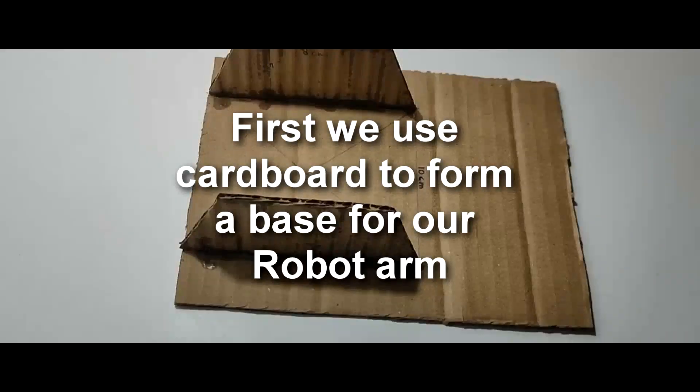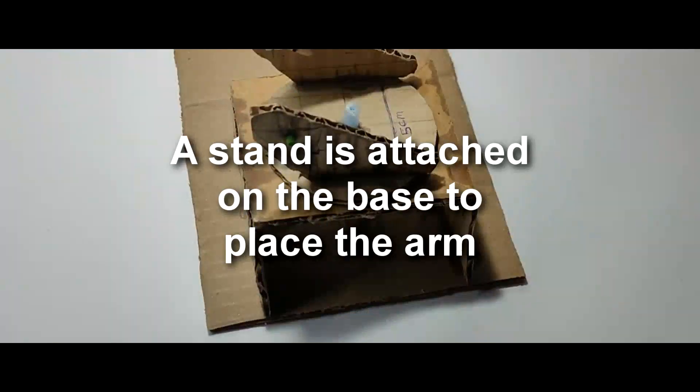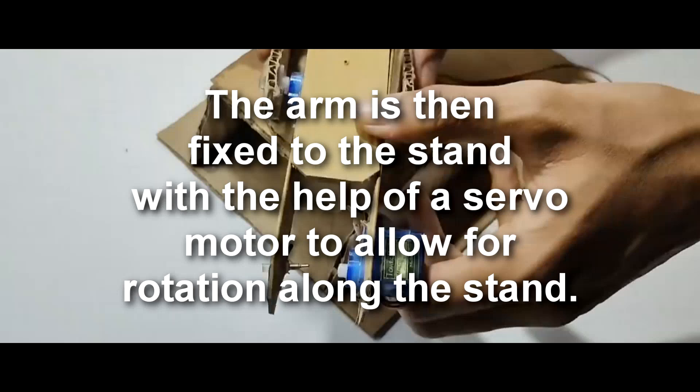Working. First, we use cardboard to form a base for a robot arm. A servo motor is attached to the base to allow for basic rotation of the arm on the xy-axis. A stand is attached on the base to place the arm. The arm is then fixed to the stand with the help of a servo motor to allow for rotation along the stand.